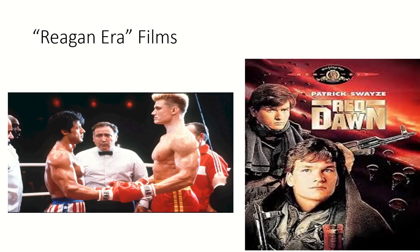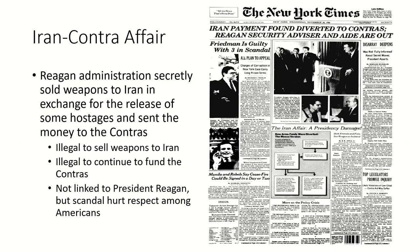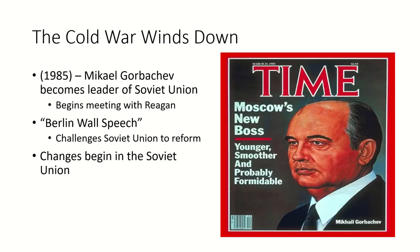The United States in the 1980s circled back to the early Cold War idea of arming rebel groups to fight communism, which showed up in many films of the era. Reagan's eagerness to end communism also led to the Iran-Contra affair — one of America's more controversial foreign policy events — where the Reagan administration secretly sold weapons to Iran in exchange for release of hostages, then sent money from those illegal weapons sales to the Contras in Nicaragua. Both were illegal, and though it was never fully linked to the President himself, it hurt his standing among Americans.